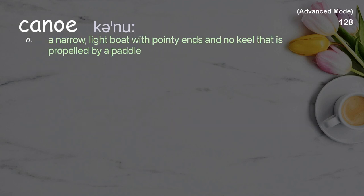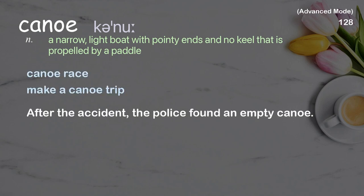Canoe: a narrow, light boat with pointy ends and no keel that is propelled by a paddle. Examples: canoe race, make a canoe trip. After the accident, the police found an empty canoe.